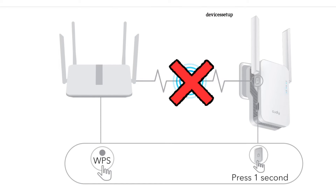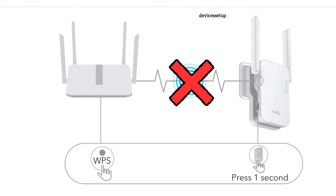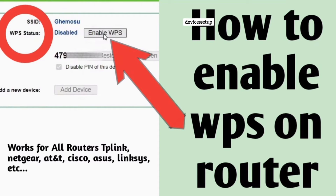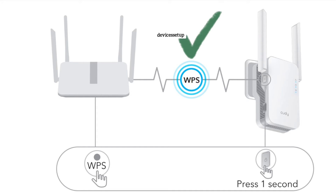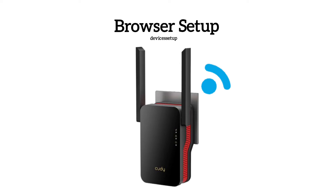If this doesn't work for you, it's possible that WPS is disabled on your router. You can watch the video on our channel on how to enable WPS and then try the WPS setup again, or else try the second method to set up the extender through a browser.